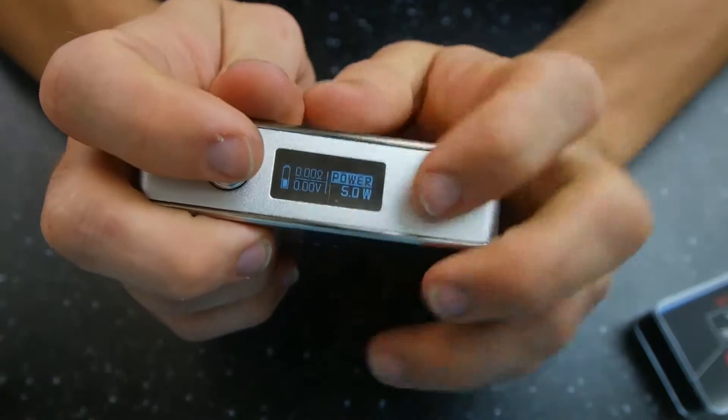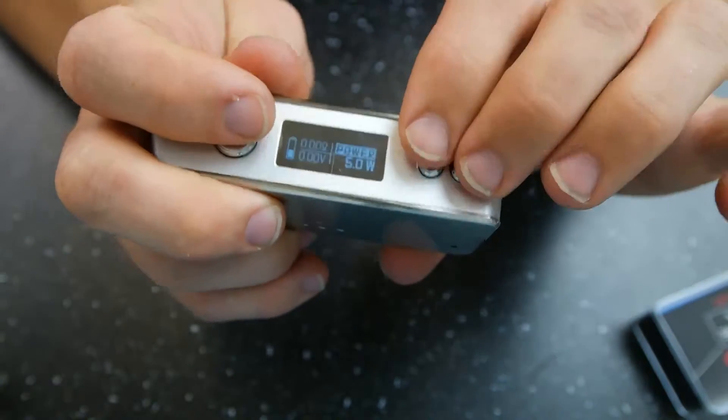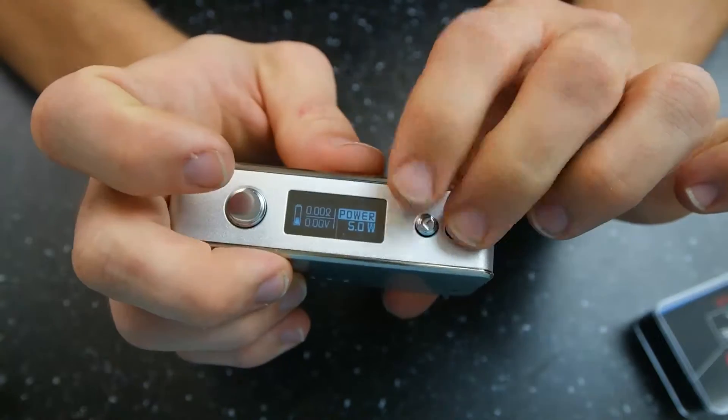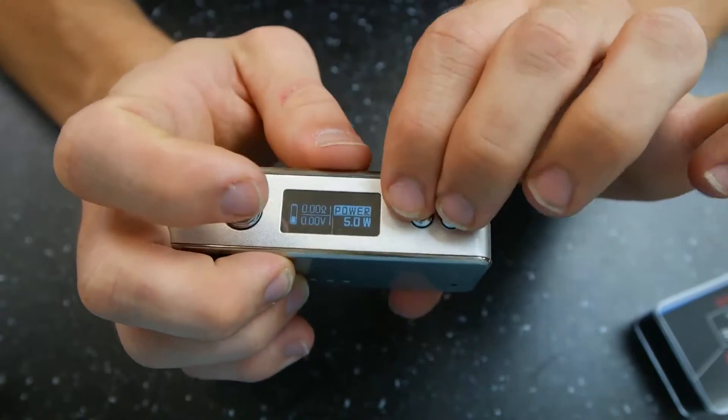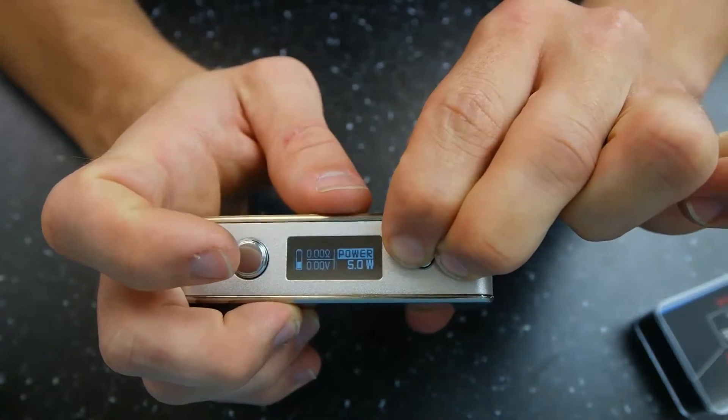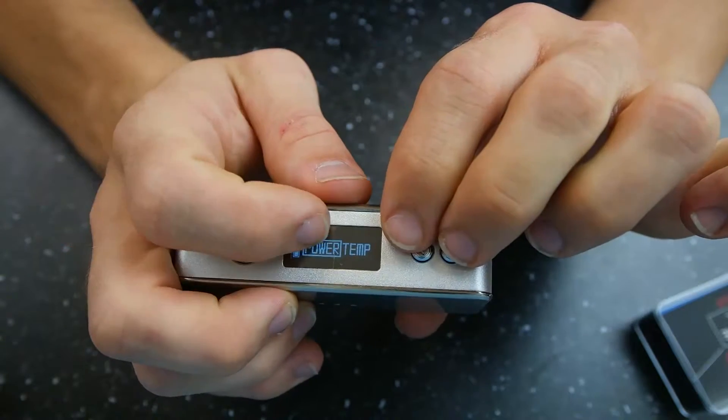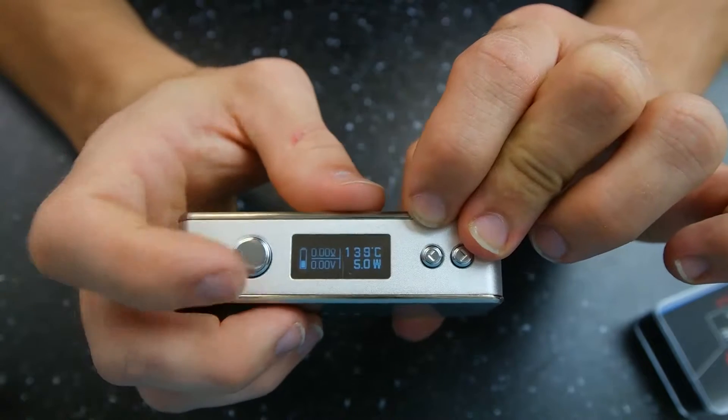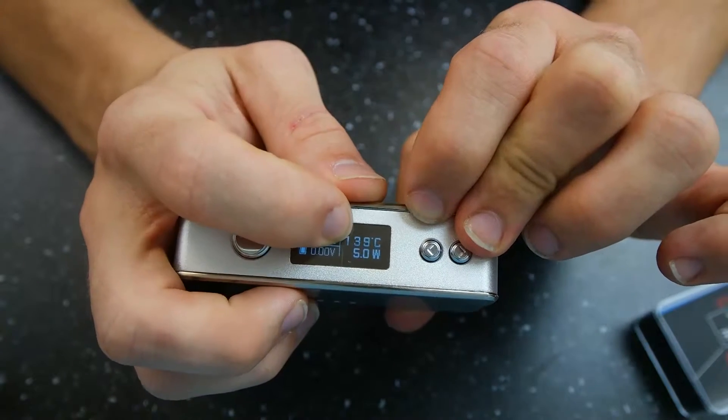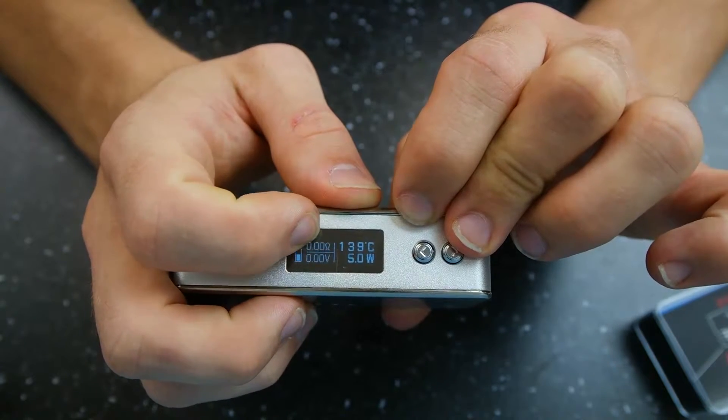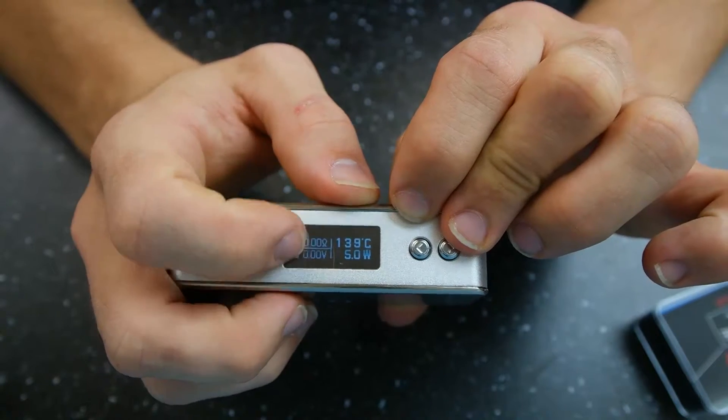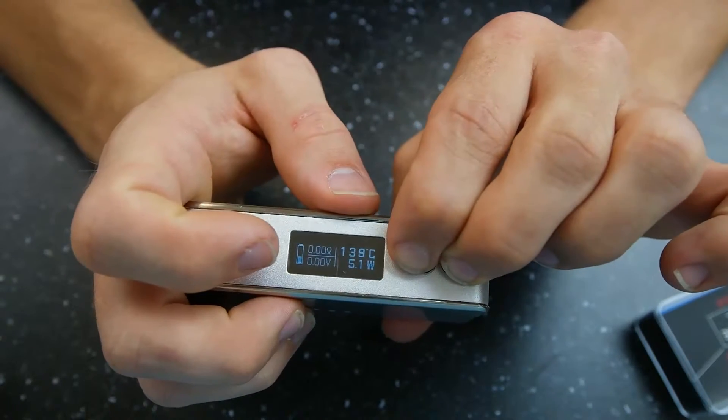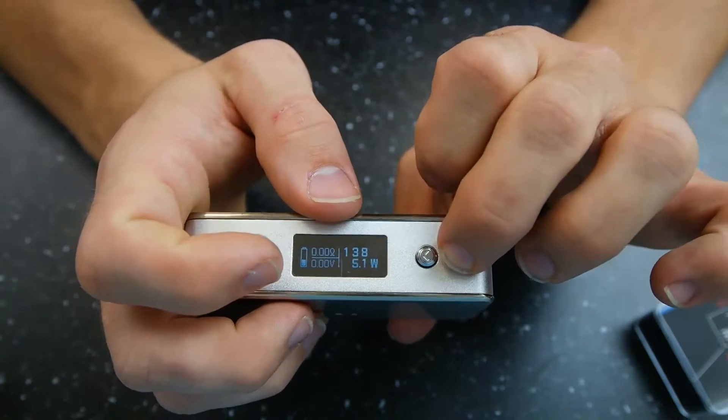To get to temp mode, what we're going to do is we're going to press and hold both of these directional buttons. Lowest wattage we can hit is five watts in the power mode. So we're going to press and hold that. It's going to come up with this power temp. We're going to go ahead and go over to temp and hit the fire button. Now you can see five watts, 139 degrees Celsius, and then your voltage is there. We're going to go ahead and jump into that.